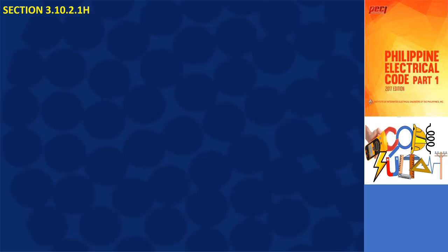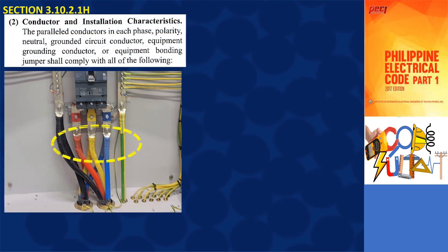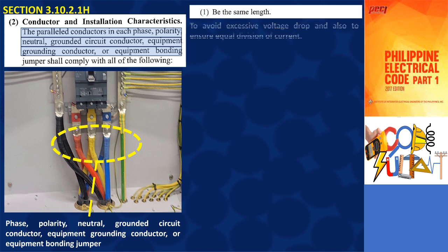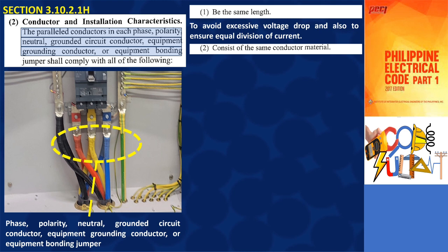To install conductors in parallel, the paralleled conductors in each phase, polarity, neutral, grounded circuit conductor, equipment grounding conductor, or equipment bonding jumper must comply with all of the following. First, be the same length. To avoid excessive voltage drop and also to ensure equal division of current, different phase conductors must be located close together to attain the requirement of having the same length. Second, consist of the same conductor material. It is a requirement that all conductors of the same phase or neutral must be composed of the same conductor material.